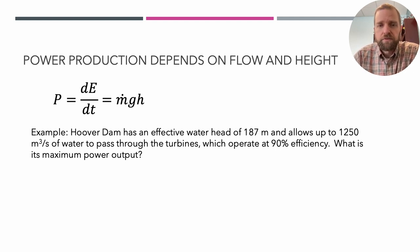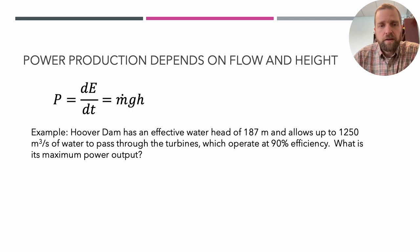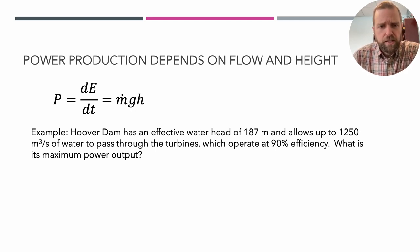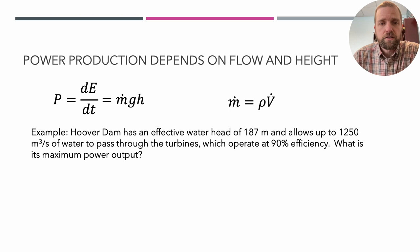Here's a quick example: Hoover Dam has an effective water head of 187 meters and allows up to 1,250 cubic meters per second of water through the turbines, which operate at 90% efficiency. What is its maximum power output? For maximum power output we use the maximum head of 187 meters. The equation uses mass flow rate in kg/s, so we first convert volume flow rate using density, and we include an efficiency term.